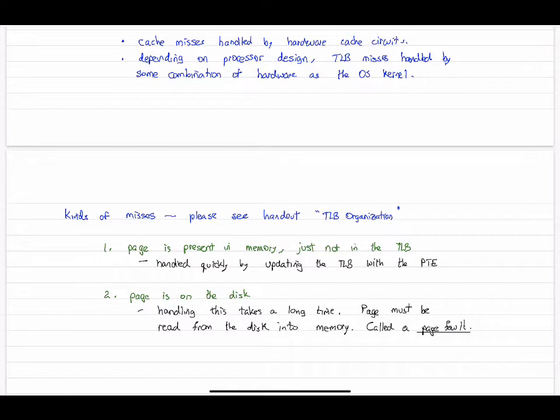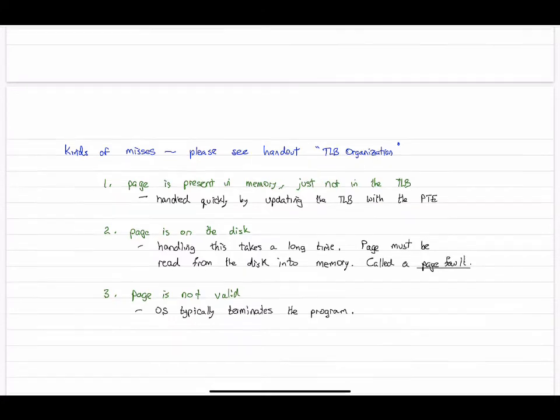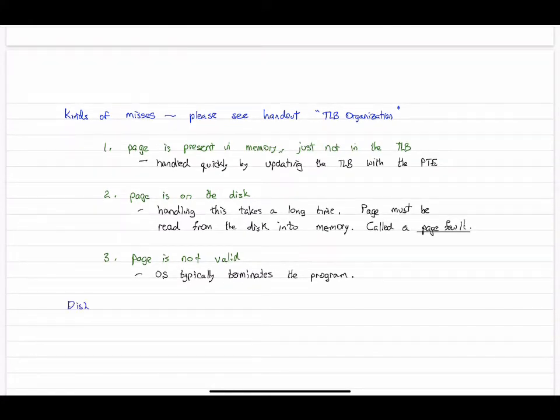Finally, the third one is if the page table is not valid at all. In that case, the operating system typically just terminates the program and might give you a message like segmentation violation or operation not permitted.